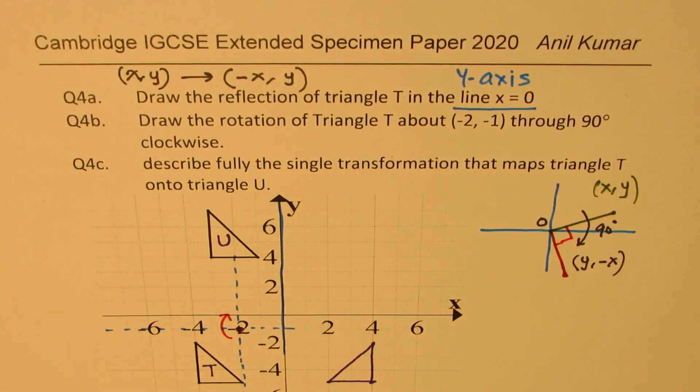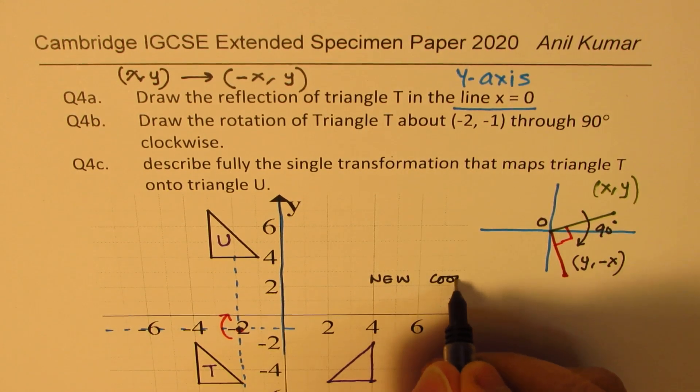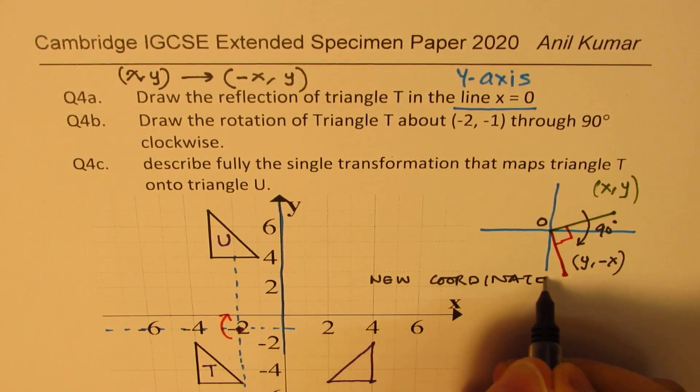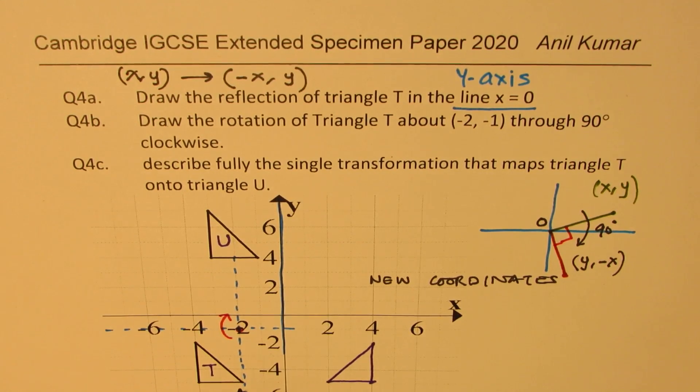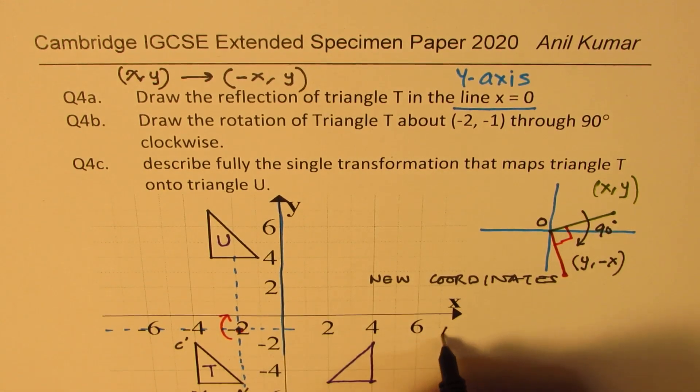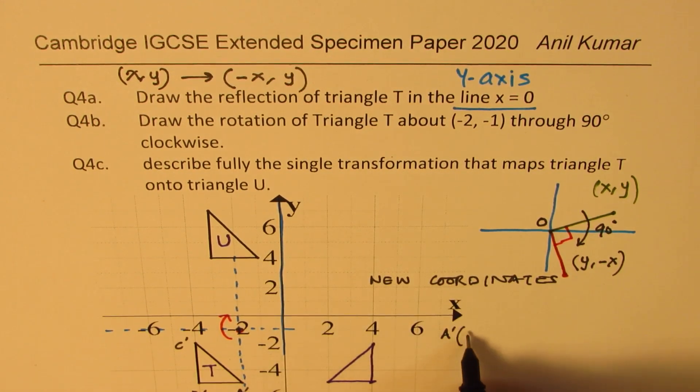So, now we have a new coordinate axis. Let's call this a new system, new coordinates. Let's write down the new coordinates according to the origin at minus 2, minus 1. According to this, these points will now be what? Let's call them A dash, B dash, C dash. In that case, the coordinates for A dash will be, reading for the new one: 0 and 1, 2, 3, 4, minus 4. So it is 0 and minus 4.